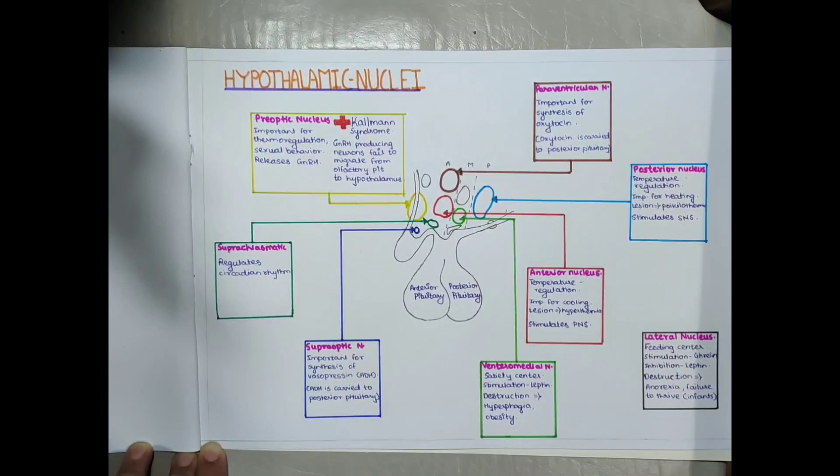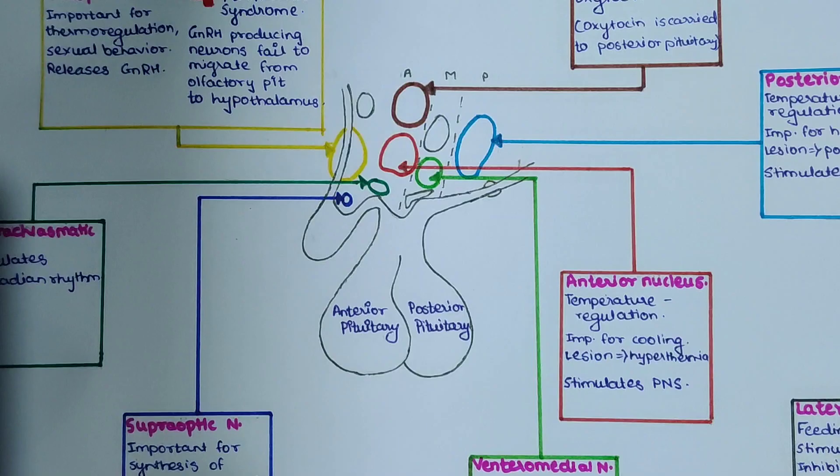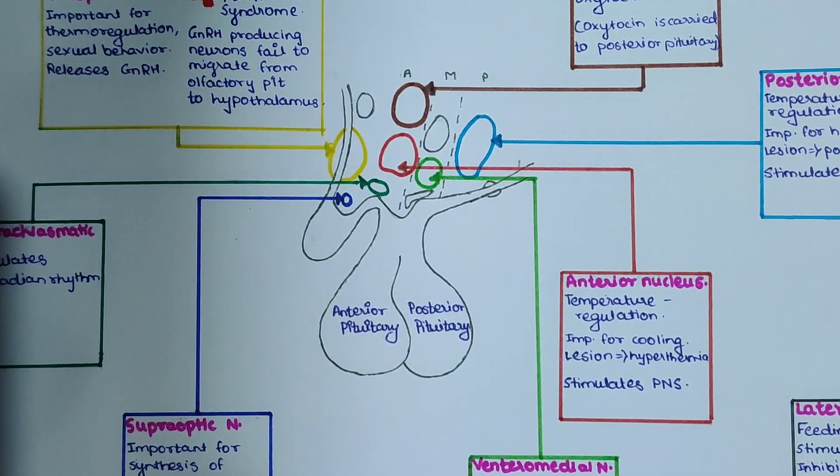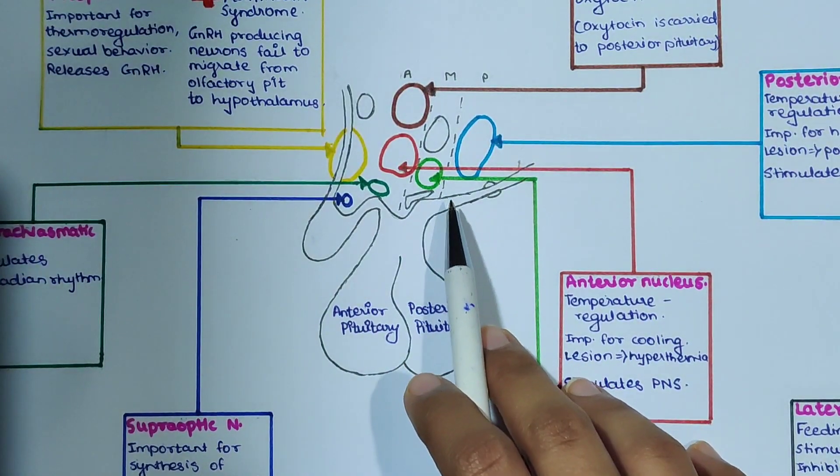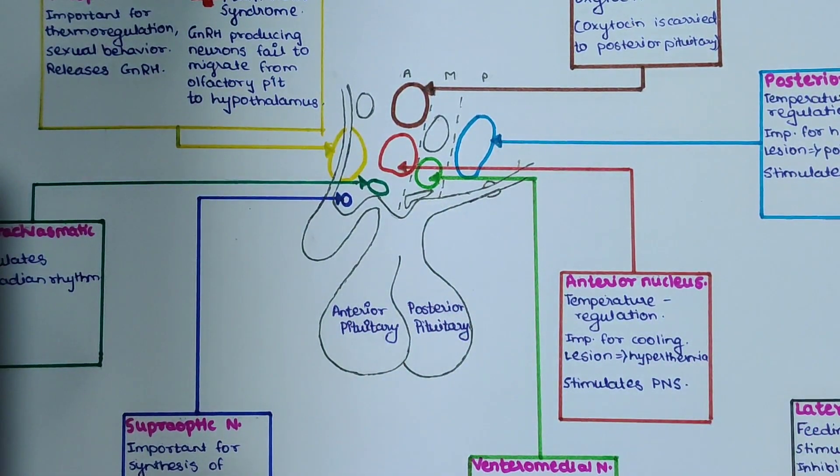Hello everyone, today's topic is hypothalamic nuclei. Let us have a look at this rough diagram. Here is our anterior pituitary, posterior pituitary, and right above it is our hypothalamus. Hypothalamus is important for maintaining body homeostasis. It regulates thirst, controls anterior and posterior pituitary, regulates body temperature, sexual urges, and the autonomic nervous system.